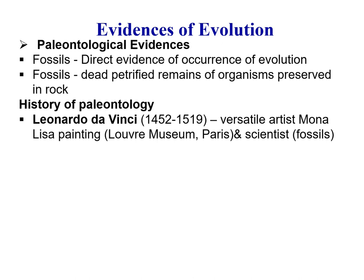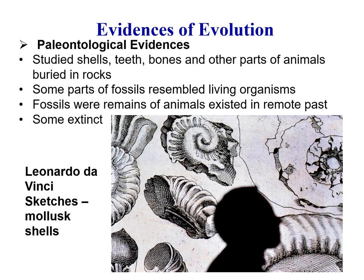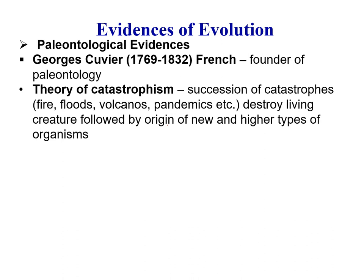If we see the history of paleontology, the name of Leonardo da Vinci is very famous. He was a very versatile personality — a versatile artist, famous for the painting Mona Lisa, which lies in the Louvre Museum, Paris. He also studied fossils, particularly fossils of mollusks — shells, teeth, bones and other parts of animals buried in rocks. Some fossils resembled living organisms; they were remains of animals that existed in the remote past, although some of them are now extinct.